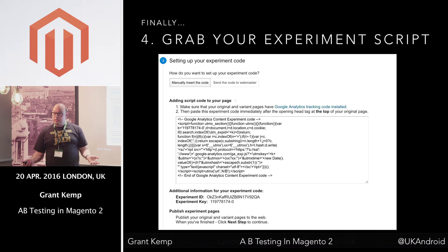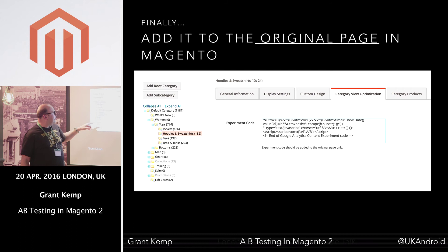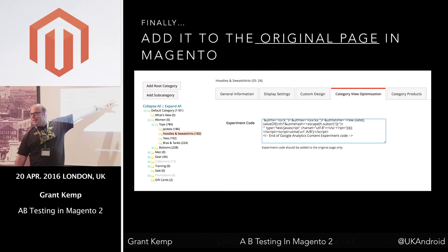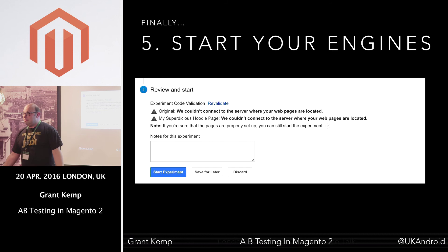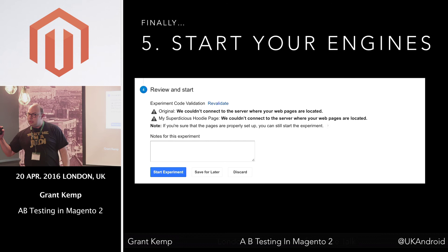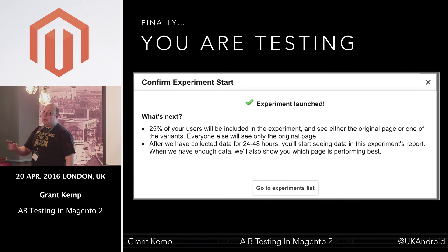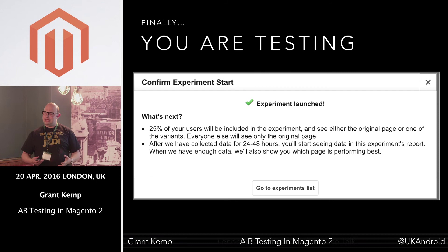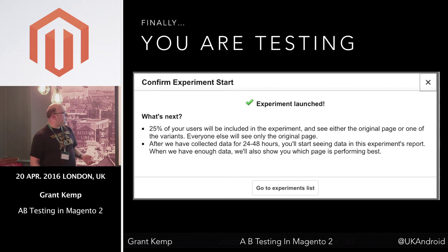I'm going to use the example of customer service — I want to create the most kick-ass customer service page that people love. Put in the URLs and paste it in here. As soon as you clear your caches, things start appearing. You can see there's a category view optimization section. I've selected my hoodies and sweatshirts, pasted the code in there. And then the bit you shouldn't forget — start your engines. You need to hit 'start experiment' because it'll only run once that's active. I sent 25% of my users through the test and got loads of people testing different pages.